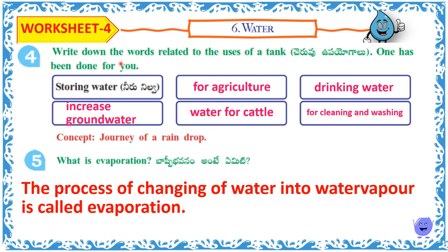Write down the words related to the uses of a tank. One has been done for you. Storing water. For agriculture. Drinking water. For cleaning and washing. Water for cattle. Increase groundwater.